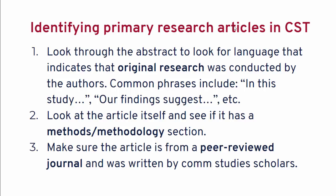There are three things you can look for when trying to identify primary research articles in communication studies. The first is to look through the abstract for clues. I always recommend reading the abstract of any scholarly article because it gives you a sense of whether it will meet your information needs. You can usually tell from the abstract if the source is primary research. Common phrases to look for are things like 'in this study,' 'our research suggests,' or 'our findings suggest.'